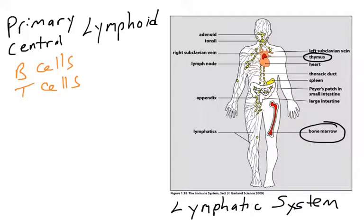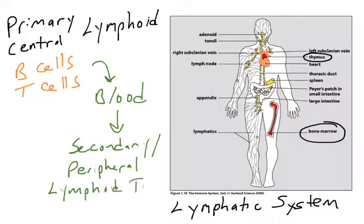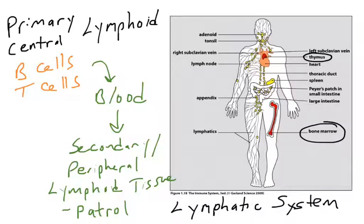B cells and T cells are lymphocytes. They develop and mature in primary lymphoid tissues — the thymus and bone marrow. These lymphocytes will travel via the bloodstream and enter secondary lymphoid tissues, sometimes called peripheral lymphoid tissues. These are the lymph nodes you commonly associate with swelling during an infection, and this is where lymphocytes patrol and look for pathogens.